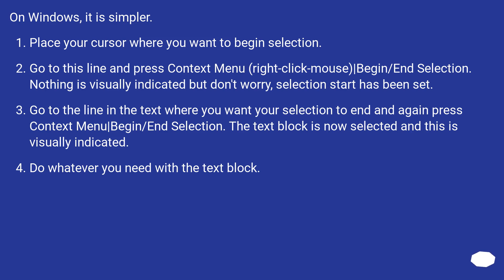Go to the line in the text where you want your selection to end and again press context menu, then vertical bar, begin/end selection. The text block is now selected and this is visually indicated. Do whatever you need with the text block.